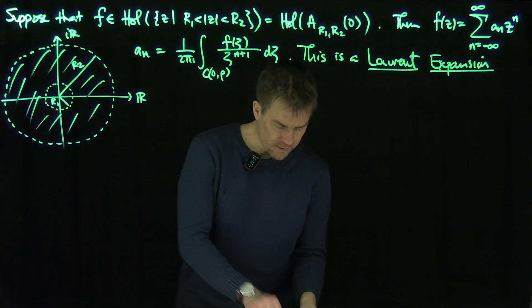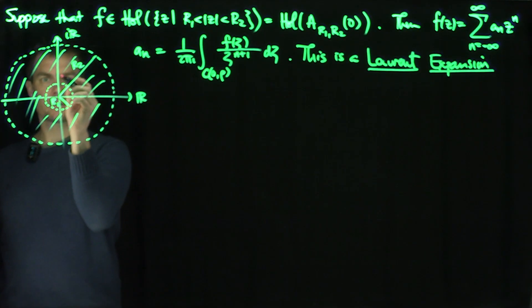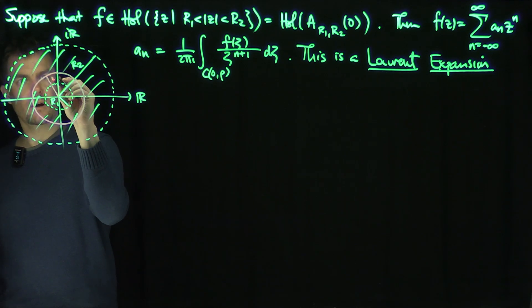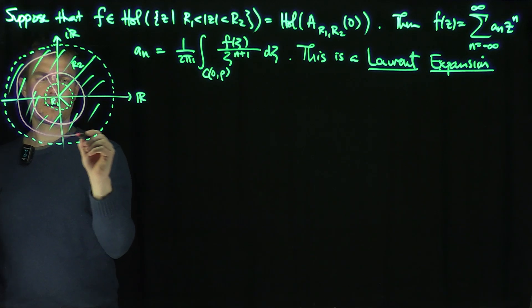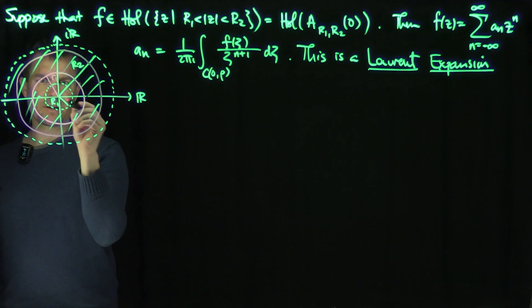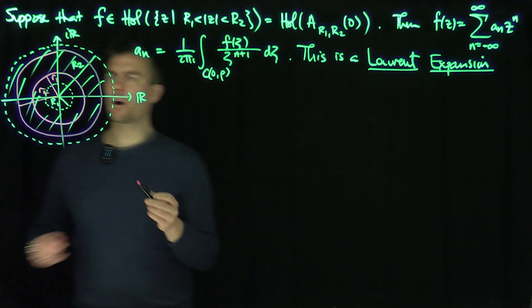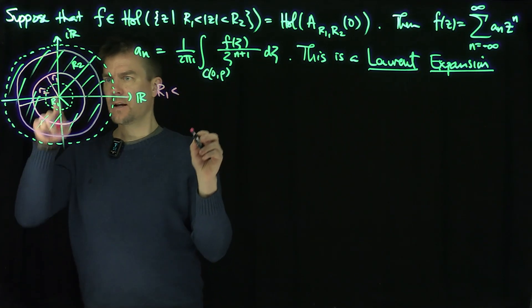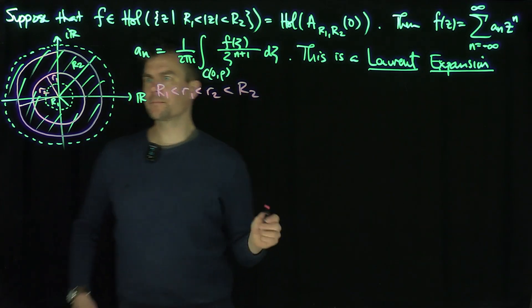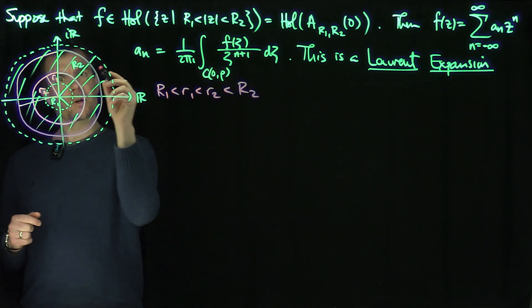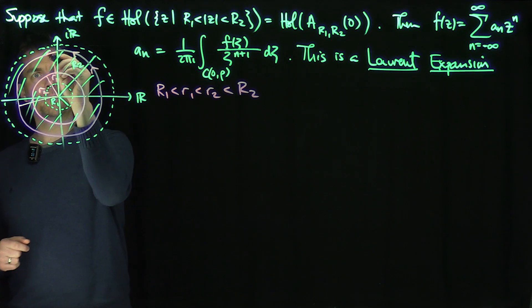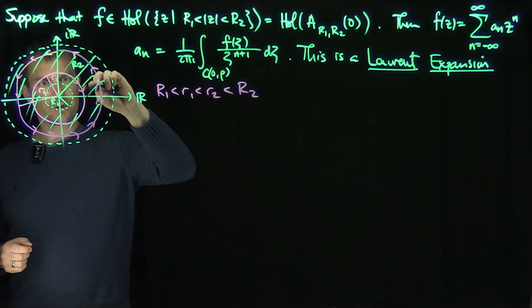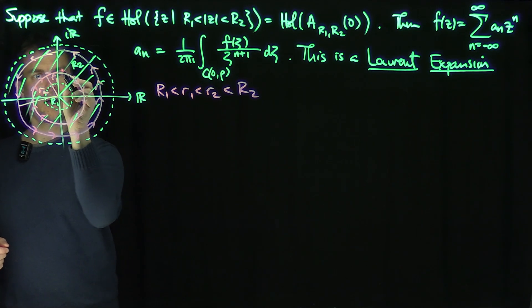So how do we prove this? The idea is that I'm going to draw two curves. There's a circle of radius little r1, and then another circle of radius little r2, selecting two numbers r1 and r2 such that big R1 < little r1 < little r2 < big R2 — so I have two circles inside the annulus. I'm going to orient the bigger circle anti-clockwise and the little circle clockwise, so they have opposite orientations.